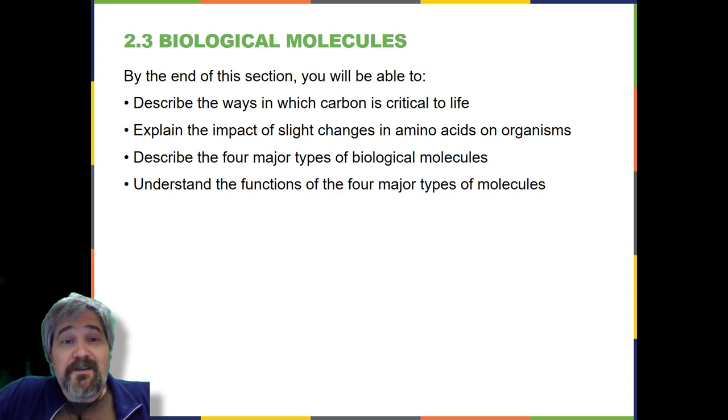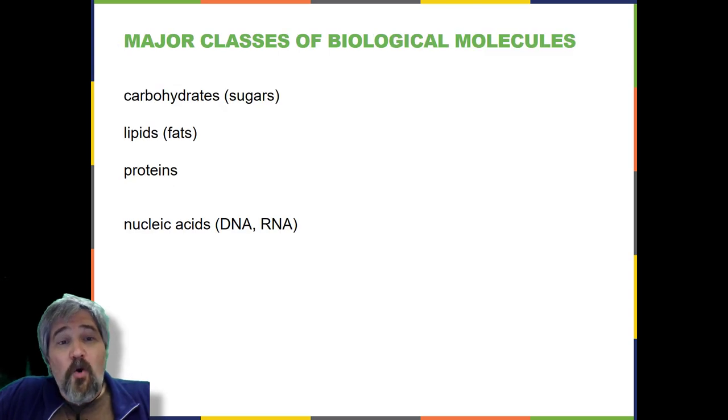The large molecules necessary for life that are built from smaller organic molecules are called biological macromolecules. There are four major classes of biological macromolecules: carbohydrates, lipids, proteins, and nucleic acids, and each is an important component of the cell and performs a wide array of functions. Combined, these molecules make up the majority of a cell's mass.